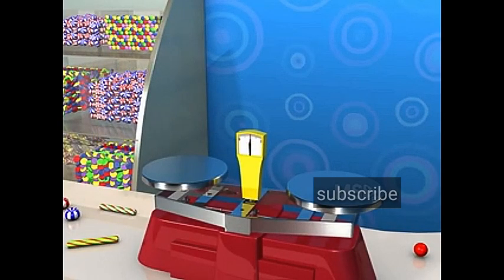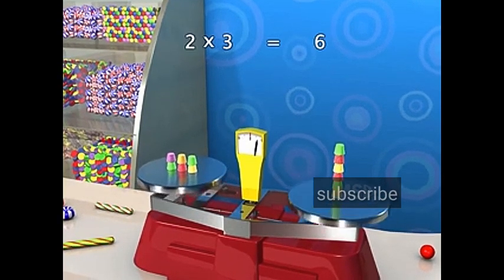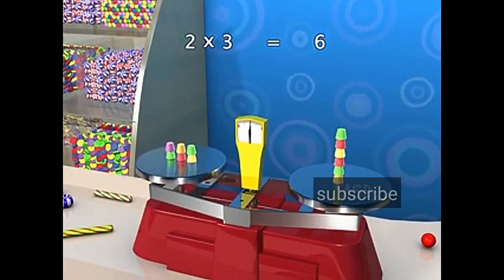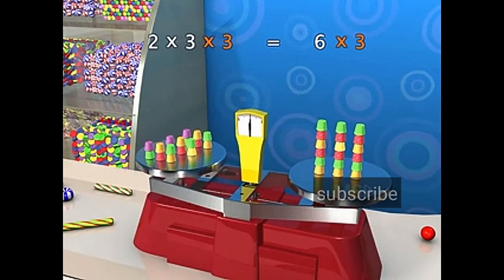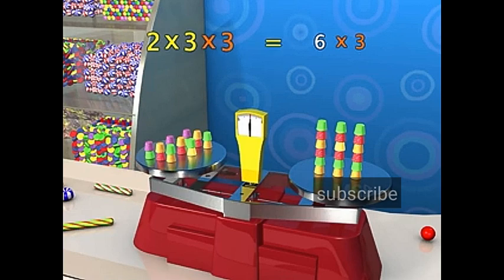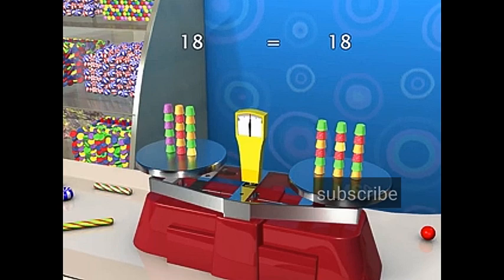For example, in the equation 2 into 3 equals 6. If we multiply both sides by 3, we get 2 into 3 into 3 equals 6 into 3. On simplification, we get 18 equals 18, which is correct.